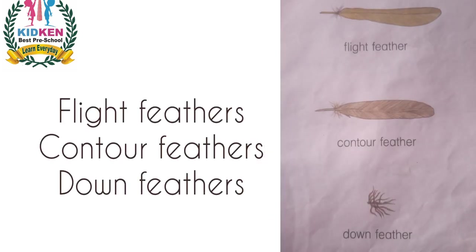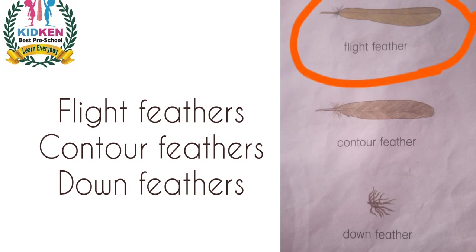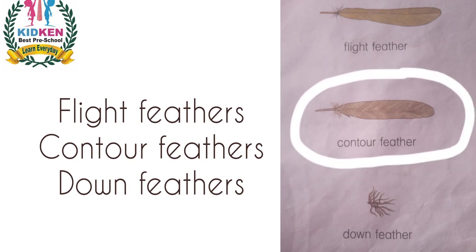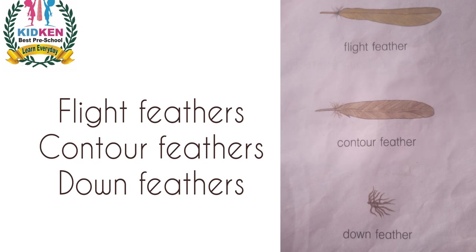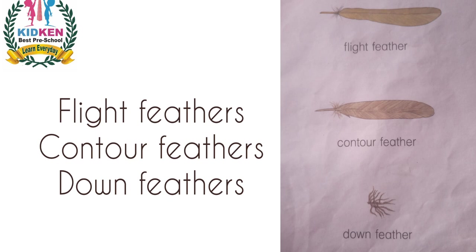The entire body of a bird is covered with feathers. There are different types of feathers. Flight feathers are found on the wings and tail. They are very strong, which helps birds fly. Contour feathers are found all around the body, including around the beak and feet. Down feathers are fluffy feathers that keep birds warm.